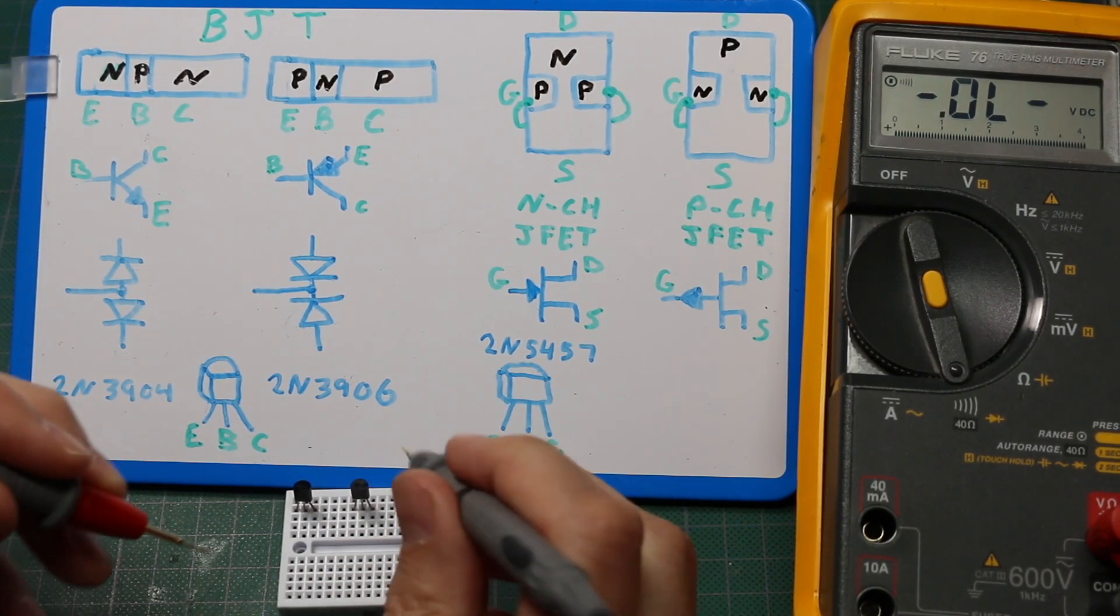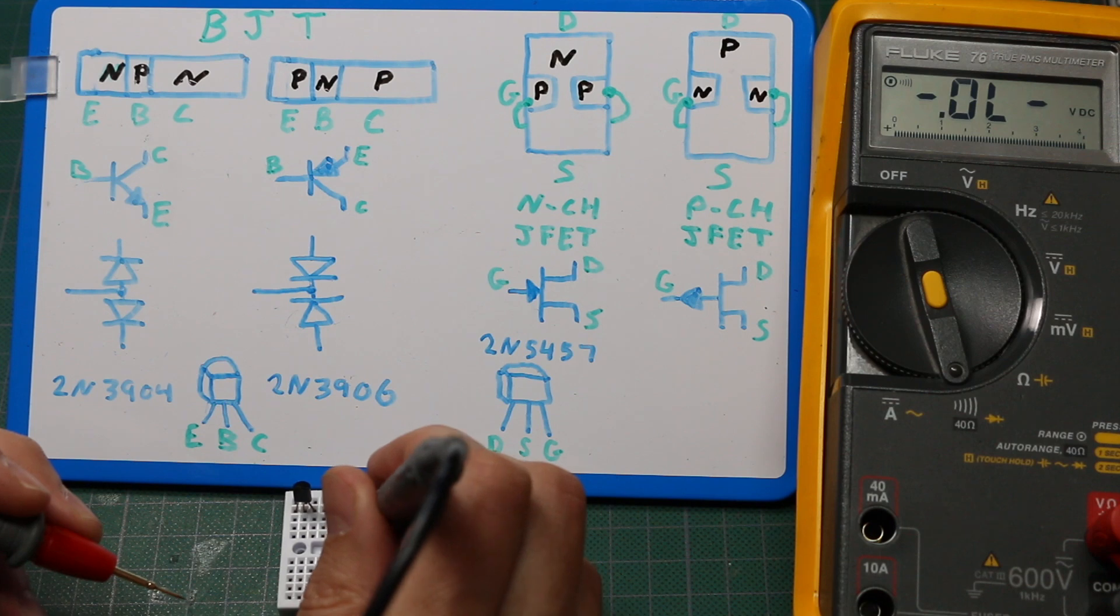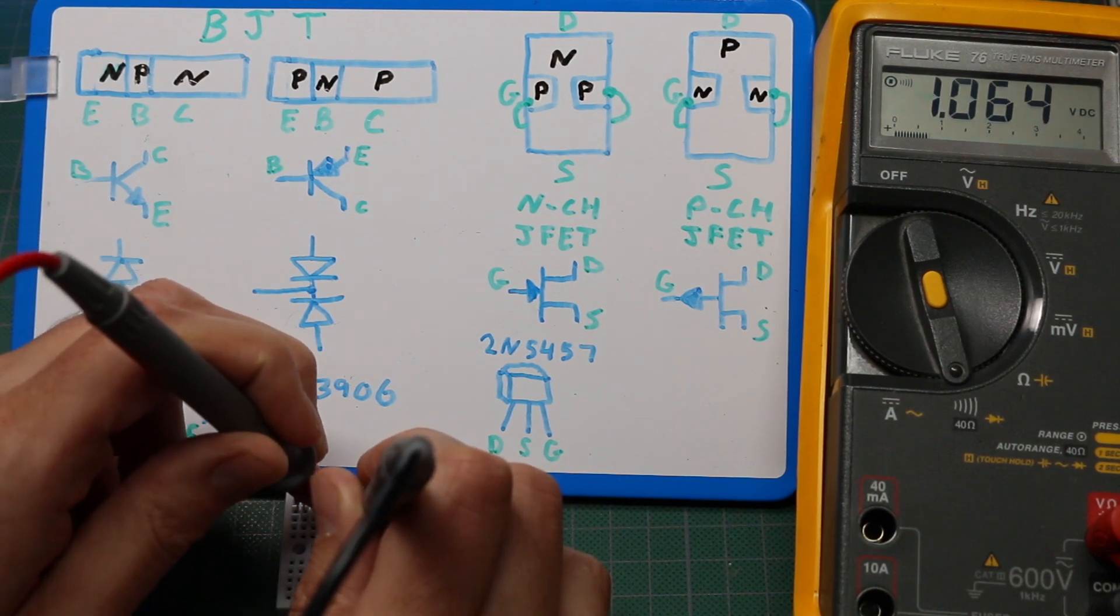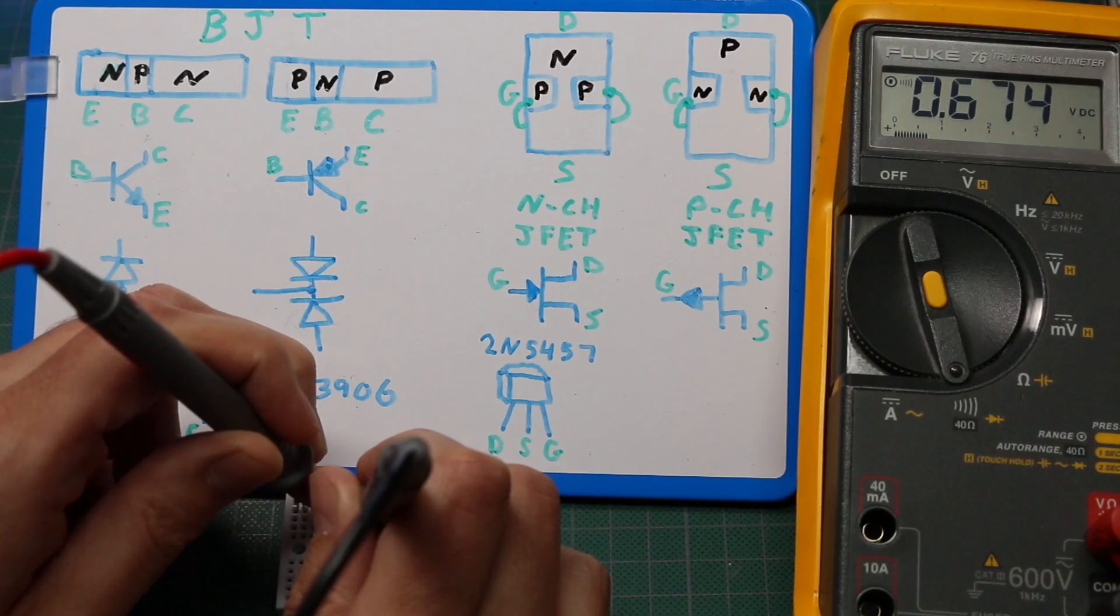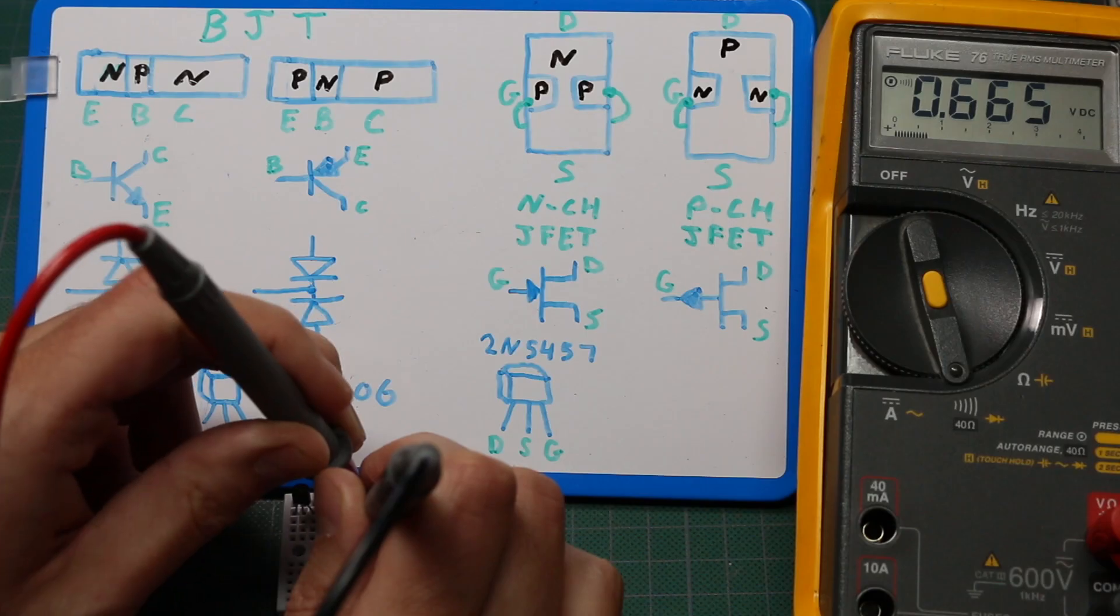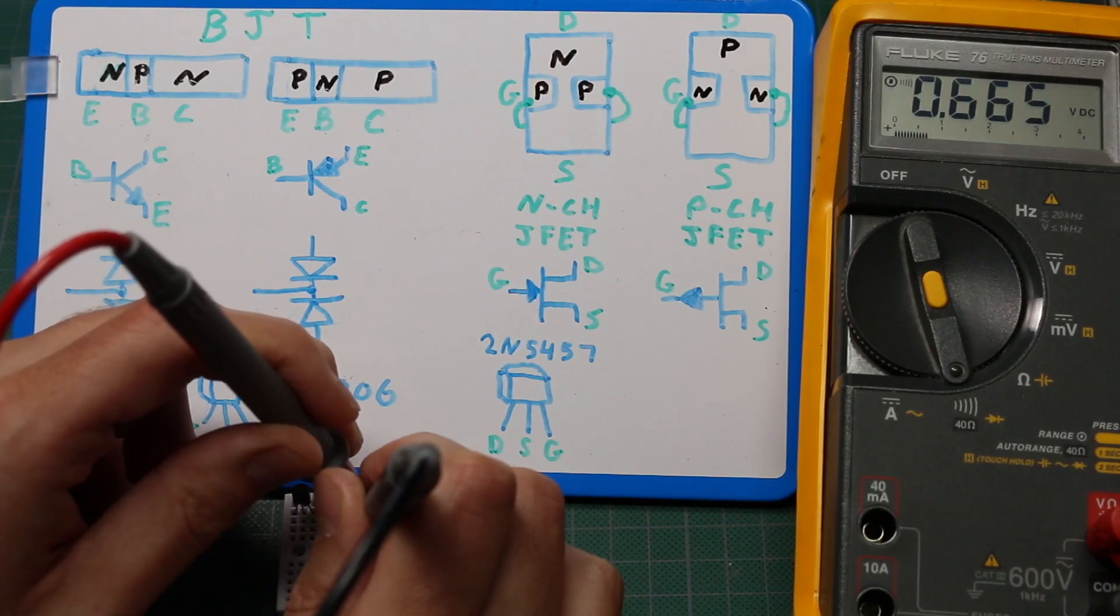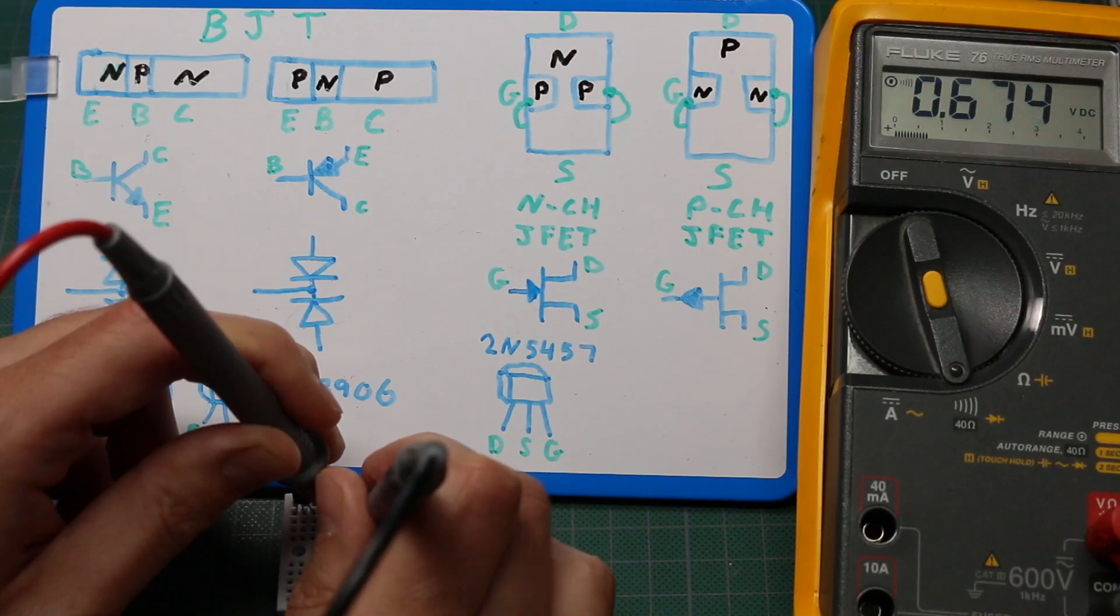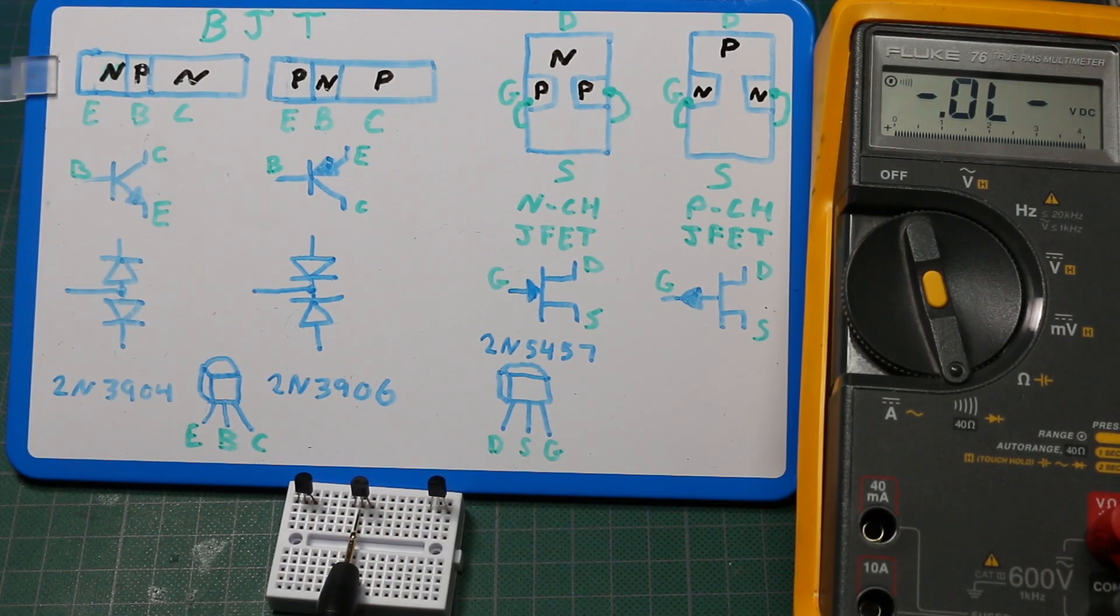Now to actually measure them, negative on the base, then positive on one of the terminals, 0.674 volts forward bias. The other terminal, 0.665 volts forward bias which is lower than that first reading. So the pins on here go emitter, base, collector.